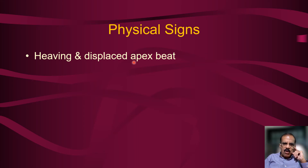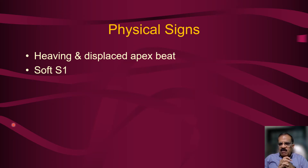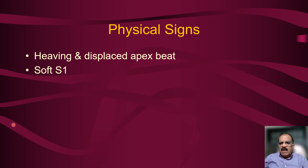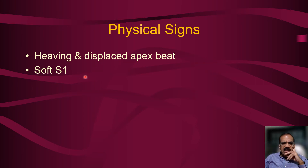The first heart sound may become soft. The first sound is produced by the closure of the mitral valve, and since in mitral regurgitation the mitral valve doesn't close properly, the first sound is soft. This is an oversimplification but is a useful way to remember: first sound is soft in mitral regurgitation.